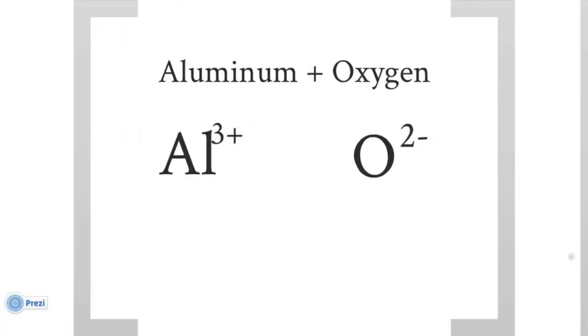Now there's a shortcut to actually getting the right formula, but we can do that simply by crossing the charges.